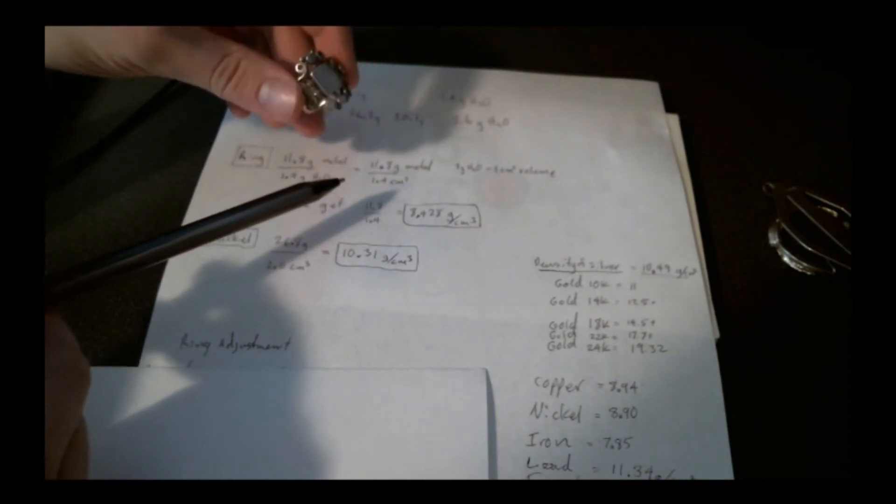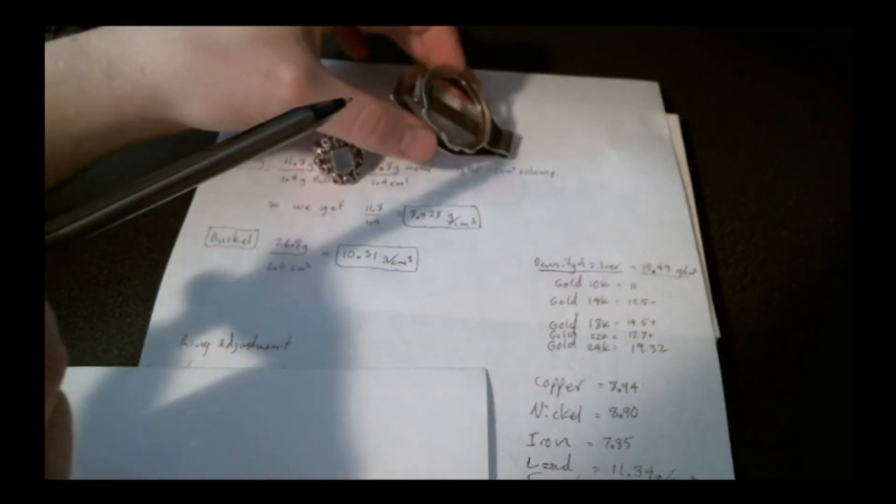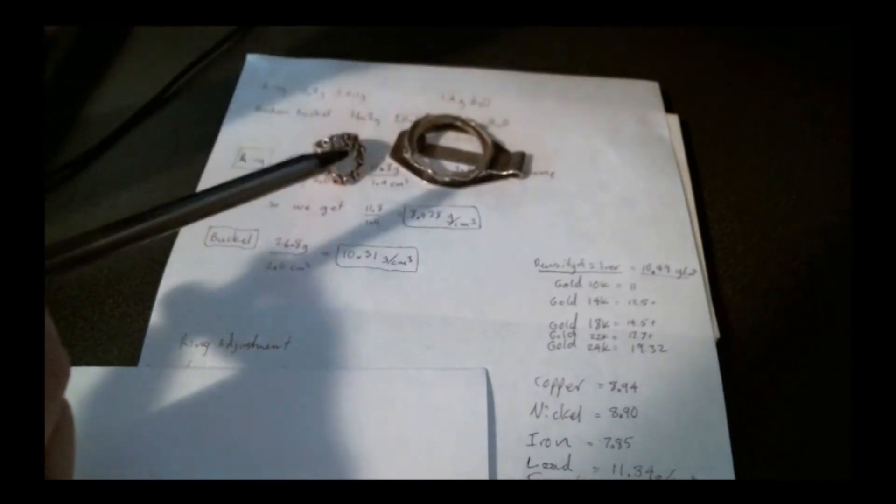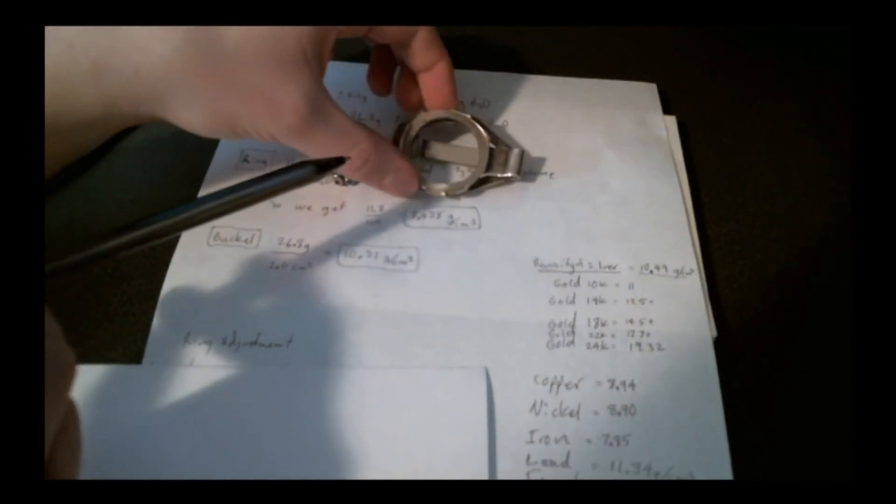So because I know that it has this gemstone that's shifting the volume of the object a lot, then I know that this test isn't a very good match for this object. But for some other objects, like this belt buckle, or just a pure ring, or maybe a bar or a coin or something, this method works very well.